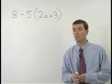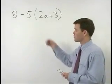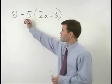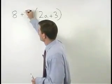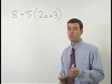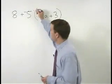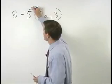So the first thing you want to do here is distribute and change this minus 5 to plus a negative 5 so that you know you're distributing a negative 5 through your parentheses.